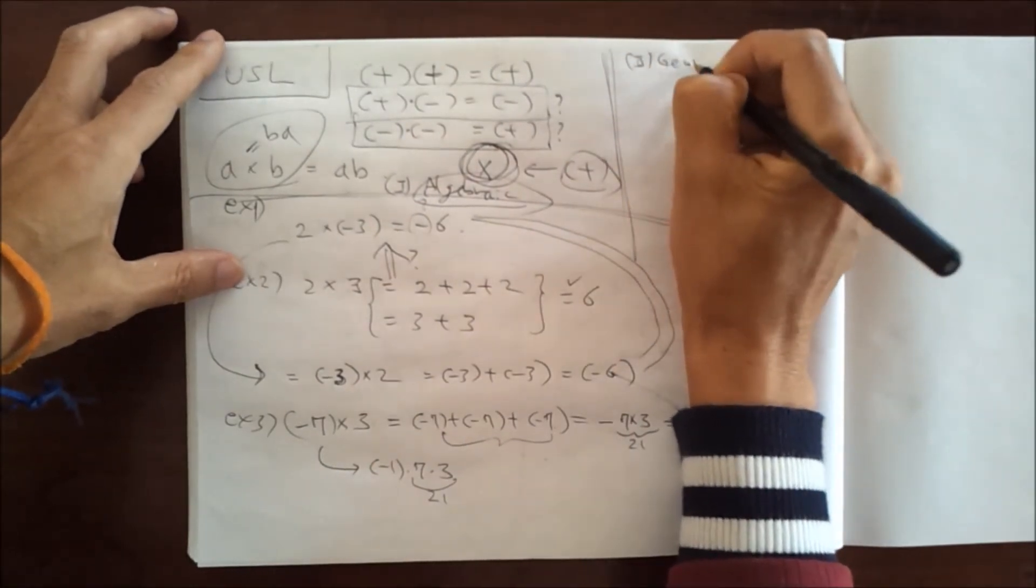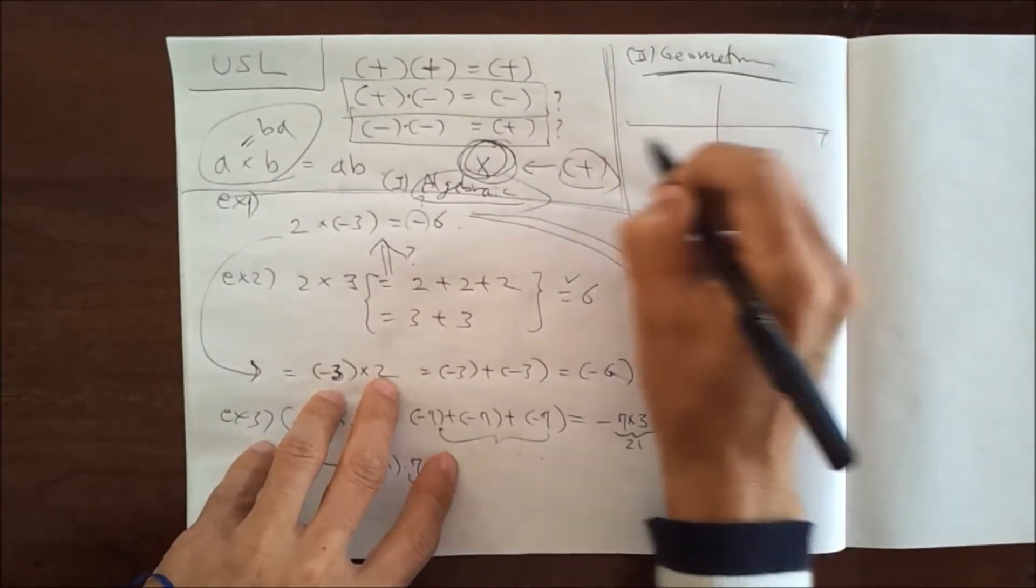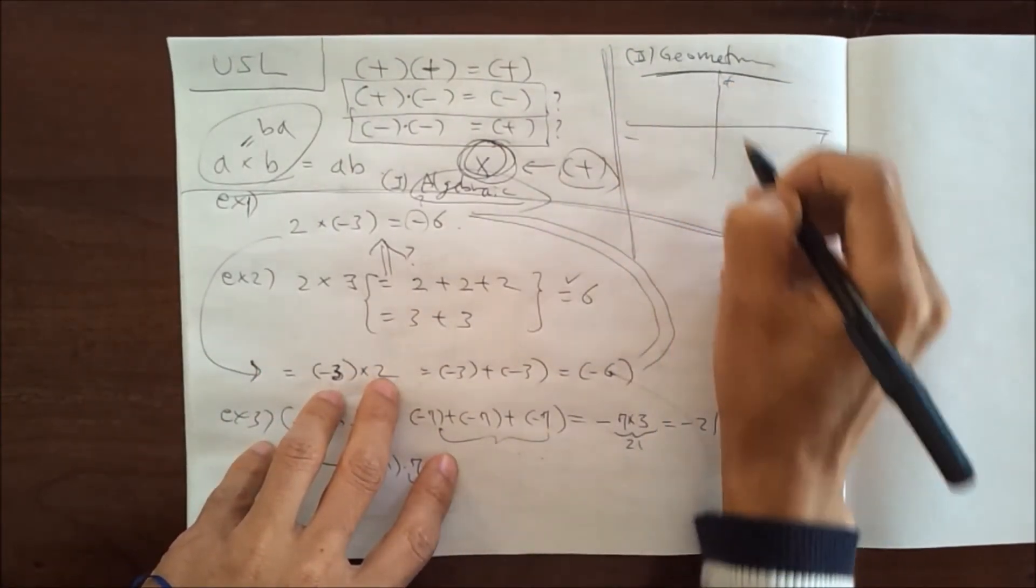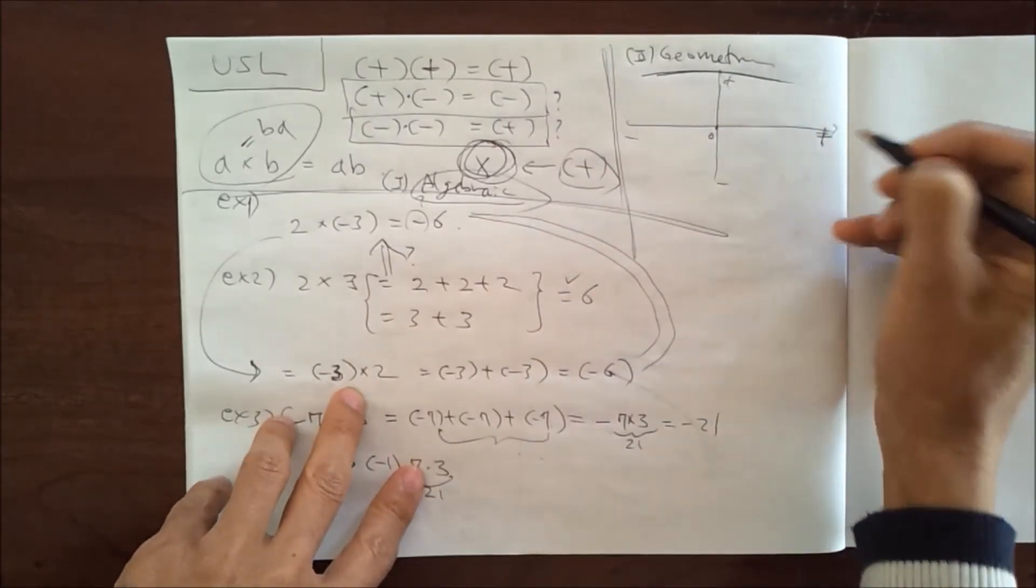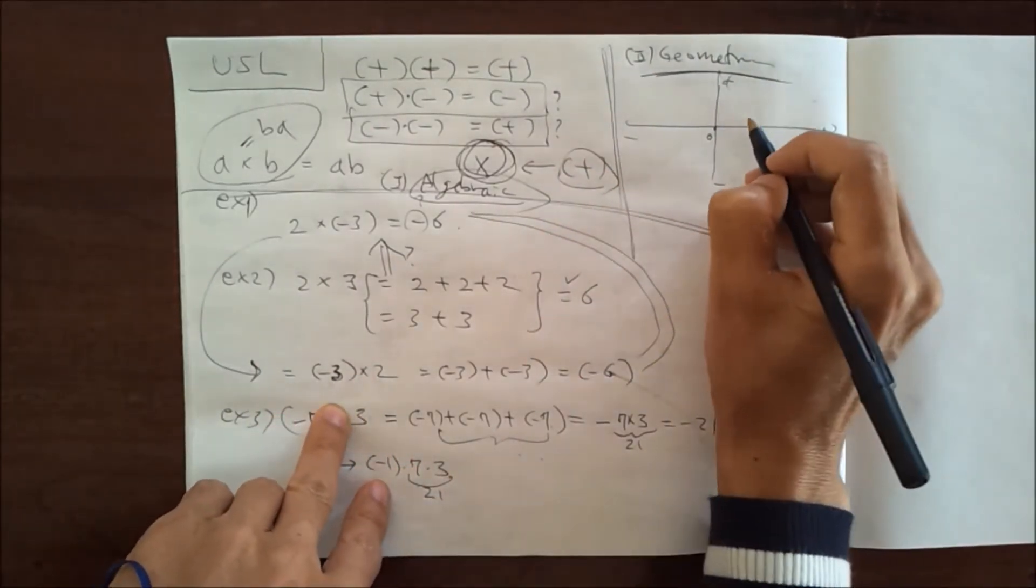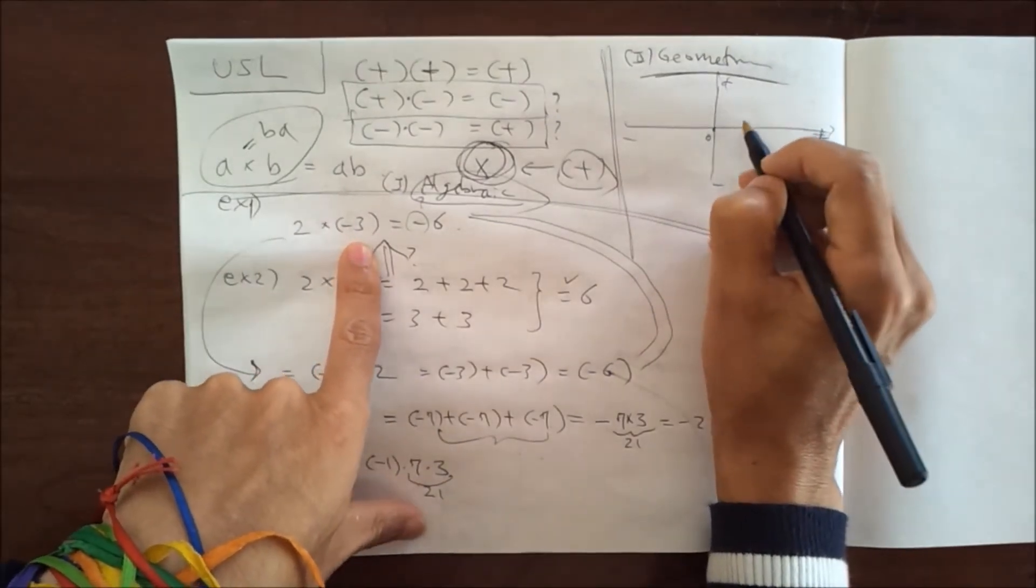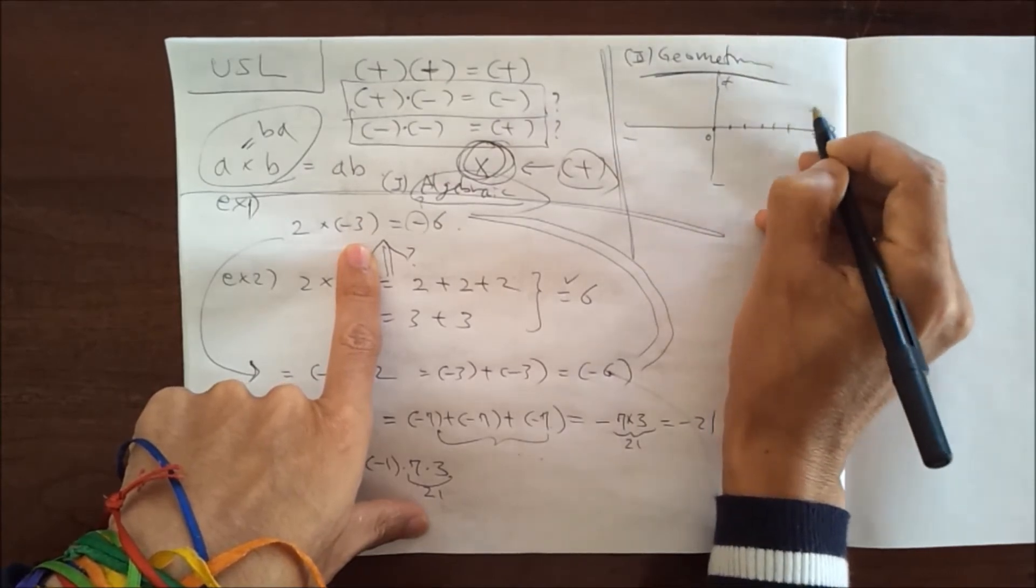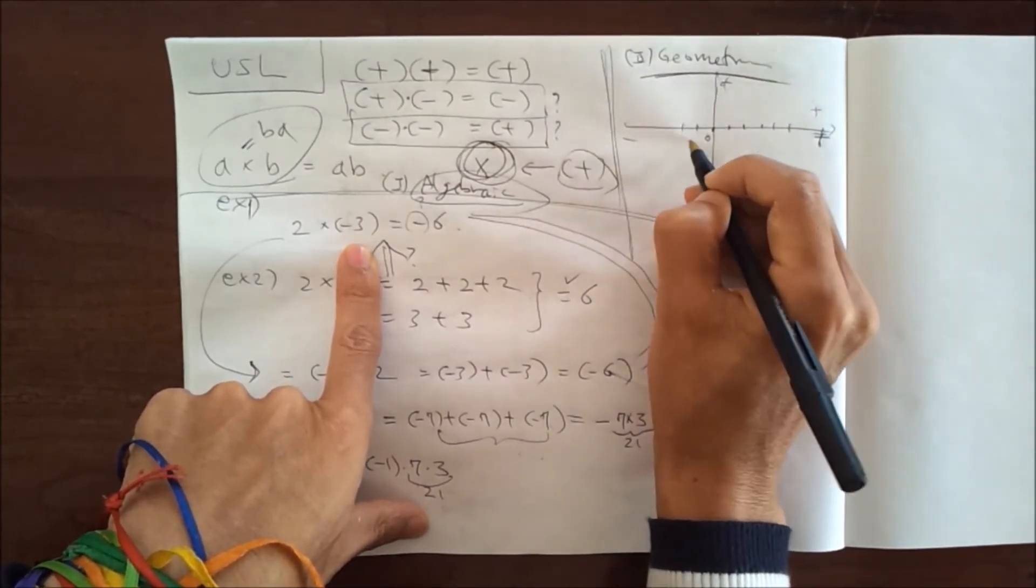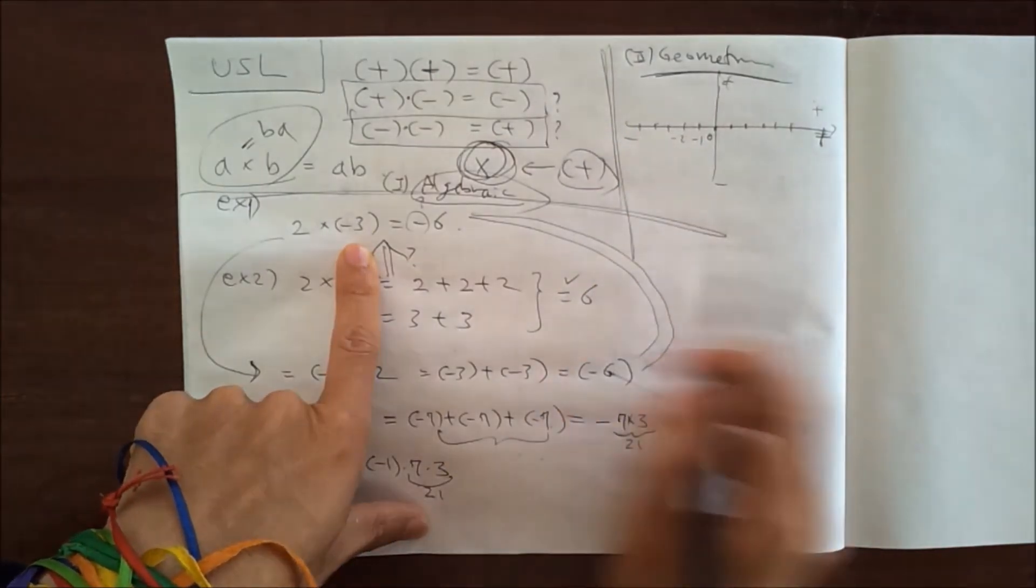Geometrically, if you approach it using the x-axis: plus, minus, or if you use y-axis: plus, minus, zero sitting here. Let's say 2 multiplied by minus 3. On the plus side: 1, 2, 3, 4, 5. On the minus side: minus 1, minus 2, minus 3, minus 4, minus 5.